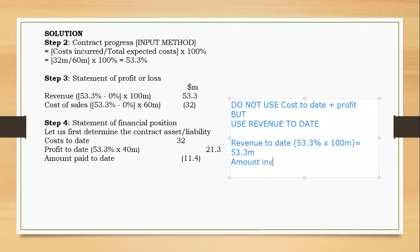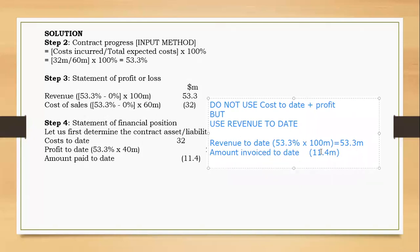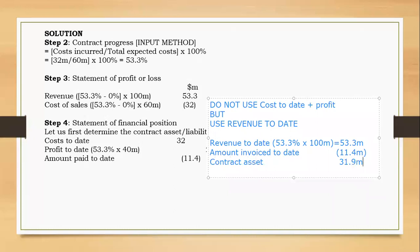Then less the amount billed or amount invoiced to the customer, which is 11.4 million. So 53.3 minus 11.4 gives a positive figure — since it's positive, it is a contract asset. If it were negative it would be a contract liability. 53.3 minus 11.4 gives approximately 41.9 million as the contract asset.